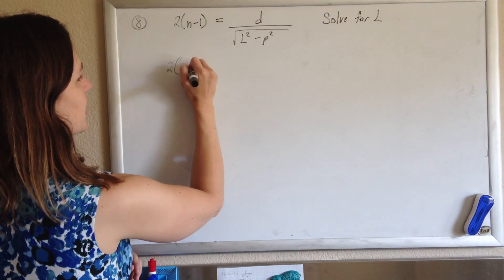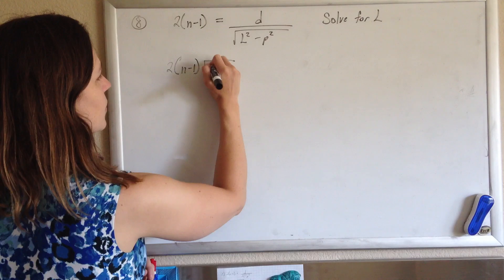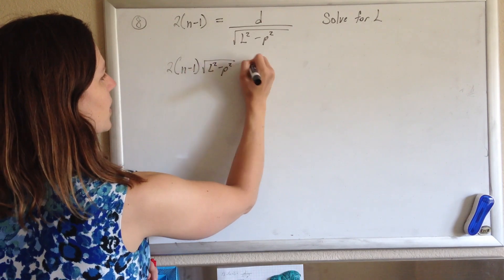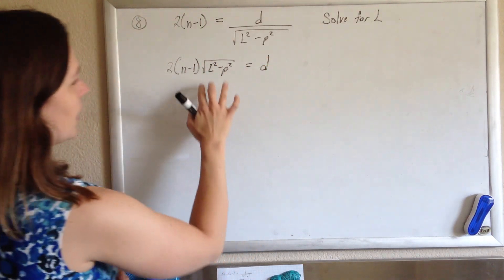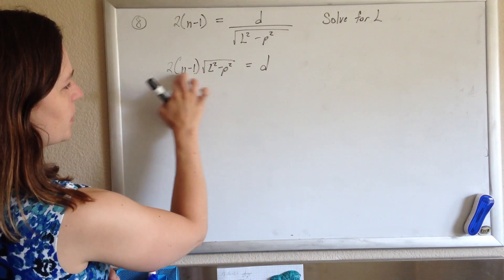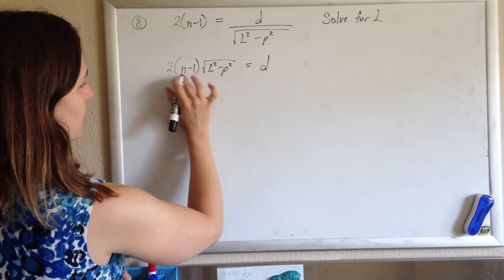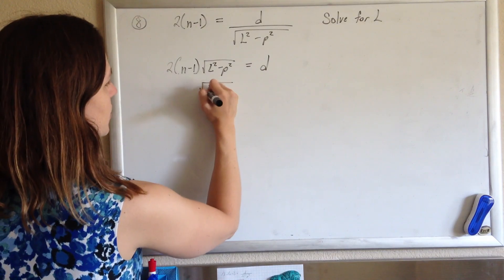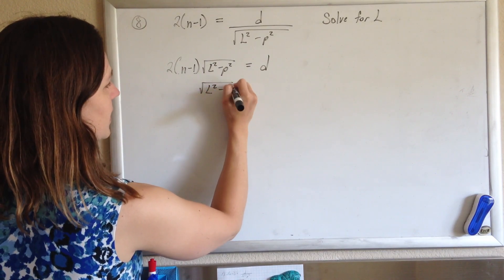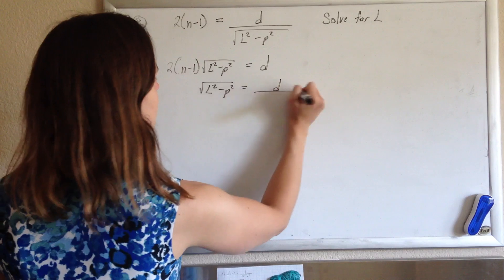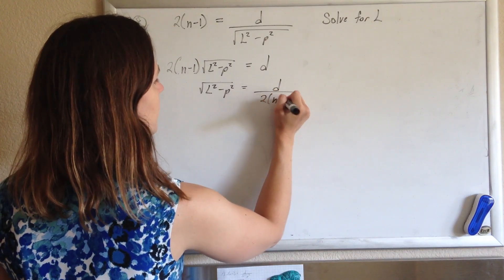So you have 2 times n minus 1 times the square root of L squared minus P squared equal to D. And now I'm going to undo this multiplication by dividing both sides by 2 times n minus 1. So I'll get the square root of L squared minus P squared equals D divided by 2 times n minus 1.